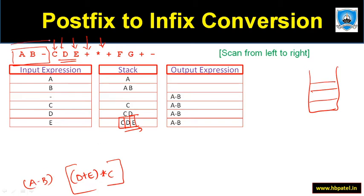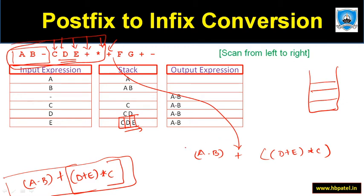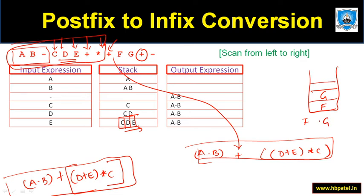Now comes plus. There is nothing left on the stack, but we have two sub-expressions: 'a - b' and 'c * (d + e)'. The plus connects them, giving 'a - b + c * (d + e)'. Then comes 'f' and 'g', which are operands — so we push f, then push g. When plus appears, we pop f and g and add them, giving 'f + g'.